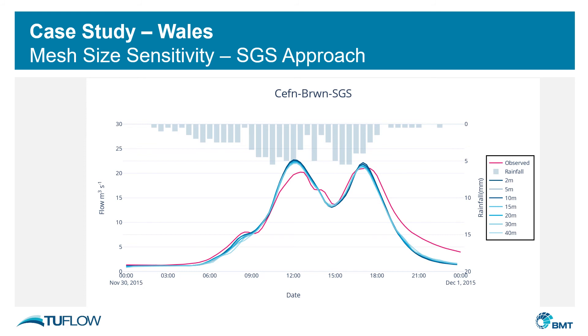So there are three main benefits of subgrid sampling: it improves the representation of the underlying topography, it eliminates sensitivity to mesh orientation, and it reduces sensitivity to the mesh size.